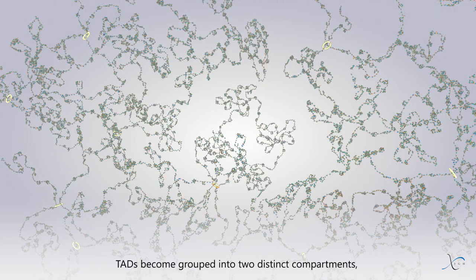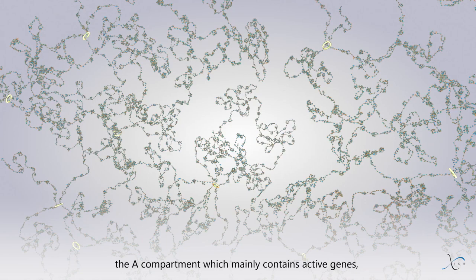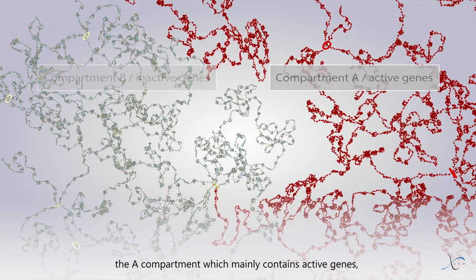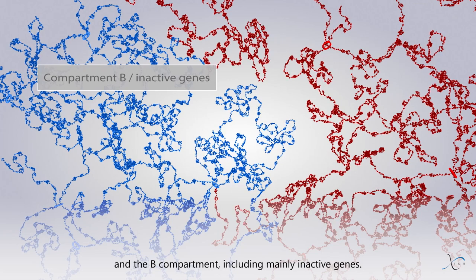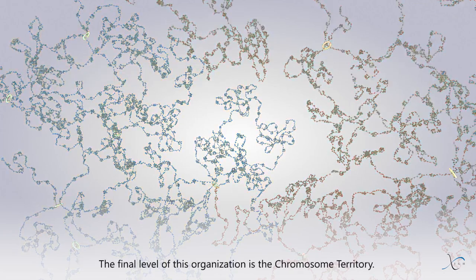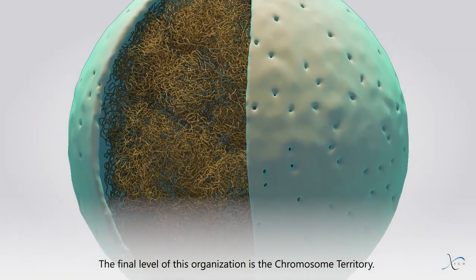TADs become grouped into two distinct compartments. The A compartment, which mainly contains active genes, and the B compartment, including mainly inactive genes. The final level of this organization is the chromosome territory.